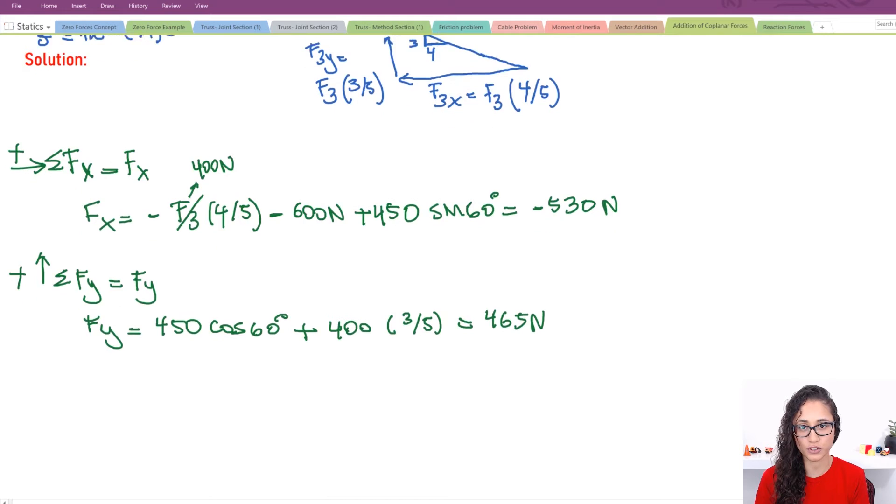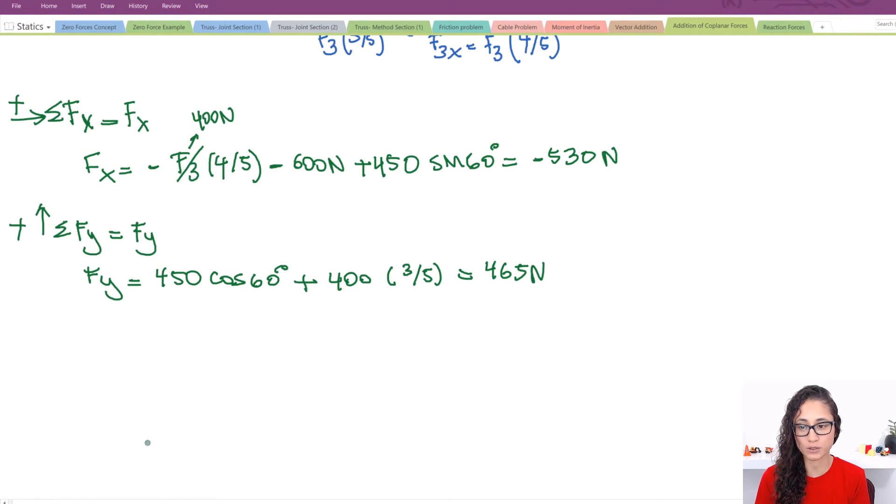So these are my two forces. And now to find the resultant force, let's actually draw this. So if we would have to draw this, I have minus Fx, which is going this way. This is Fx, right? And I have plus 465, which is, this is my Fy, right? This is my resultant force.